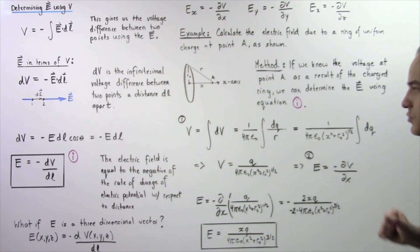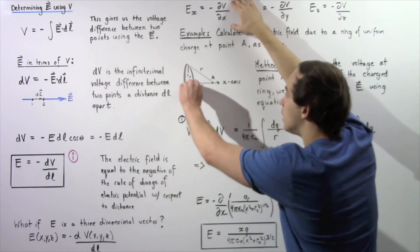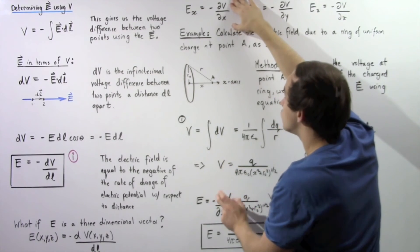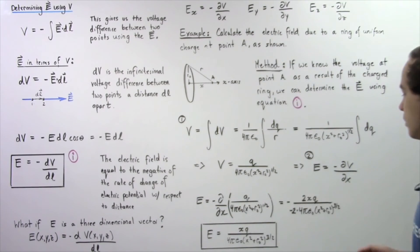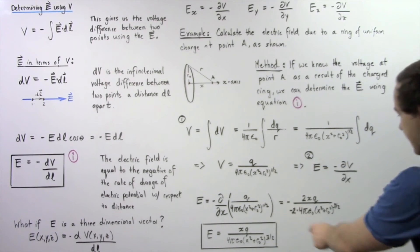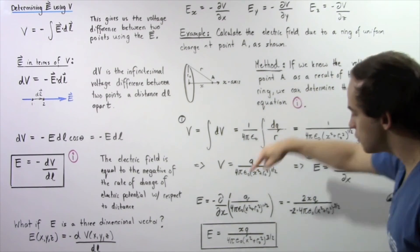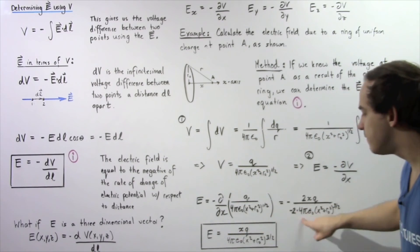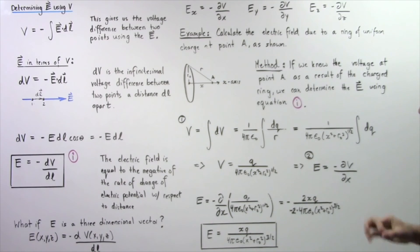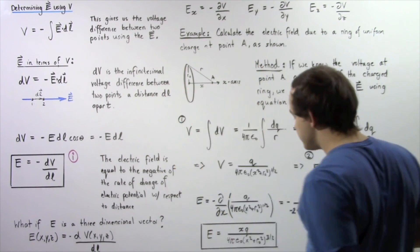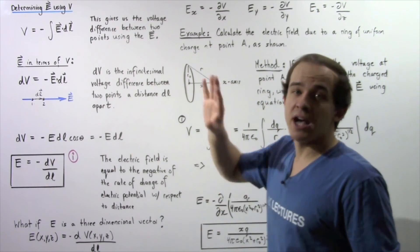Now we move to step two, where we apply Equation I. The electric field along the x axis equals the negative of the partial derivative of the voltage from step one with respect to x. Taking the partial derivative, the twos cancel, the negatives cancel, and we are left with the result that the electric field at point A due to a ring of uniform charge equals x times Q divided by 4πε₀, multiplied by the quantity (R₀² + x²) raised to the power of 3/2. Here, x is the horizontal distance, R₀ is the radius of the ring, and Q is the total charge on the ring.